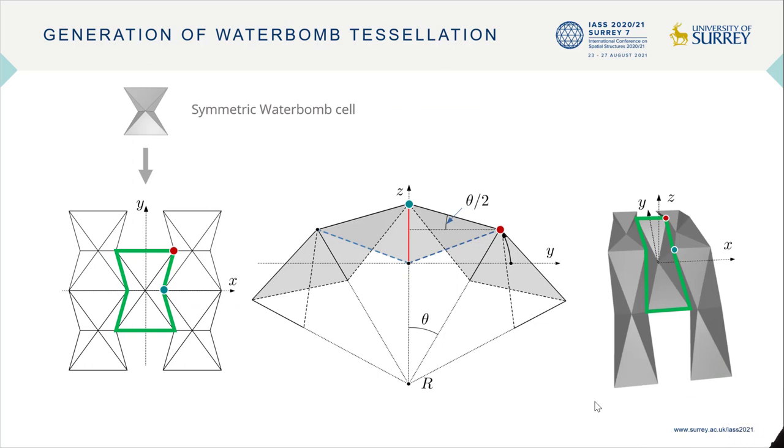Now that the kinematics of the individual cell is described, we are ready to assemble these cells to form the whole water bomb tessellation. To do this, we apply some compatibility conditions. So we start from a master cell that is highlighted here in green. Then the surrounding cells can be defined based on a specific rotation theta and a shift along x-axis.